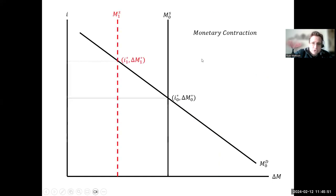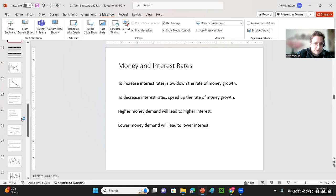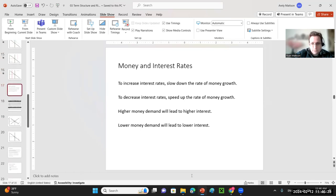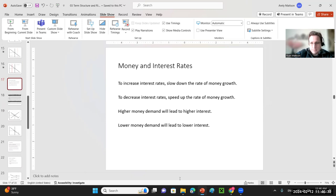A monetary contraction would have rising interest rates as the Fed contracts the money supply. We could also have money demand fall. In terms of money markets, to increase interest rates, the Fed wants to slow down the rate of money growth. To decrease interest rates, they'll speed up the rate of money growth. Higher money demand will lead to higher interest, lower money demand will lead to lower interest. That is where I am going to stop this video for today. We will get into the rest of these lectures and the yield spread in the next video when we start relating more of these bond markets and money markets.